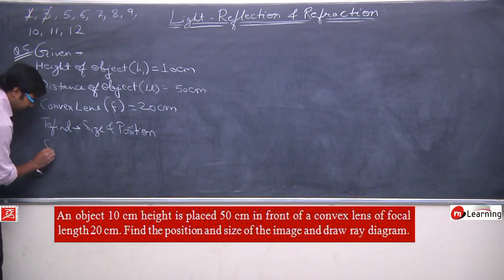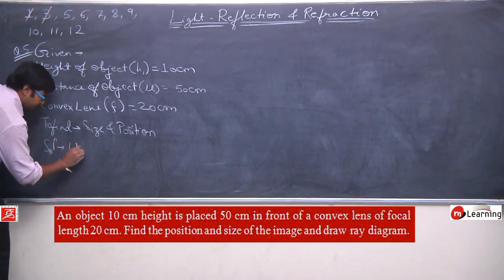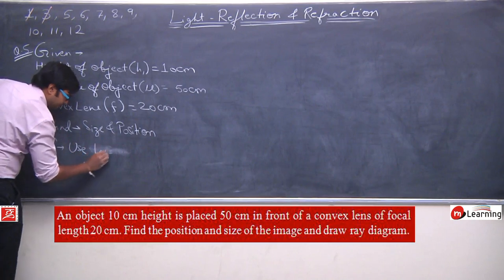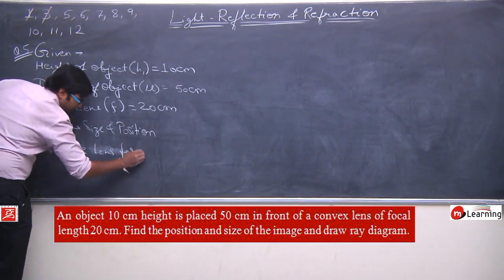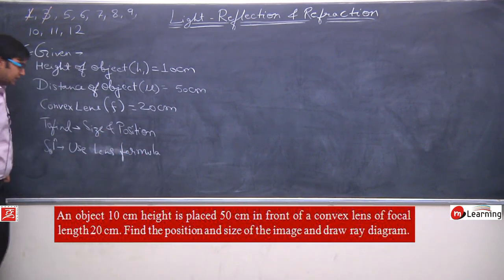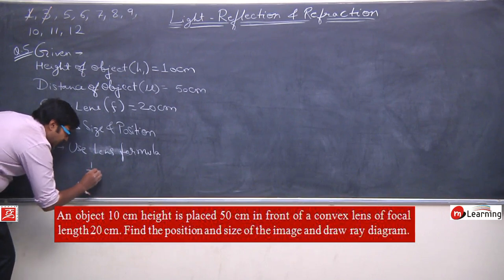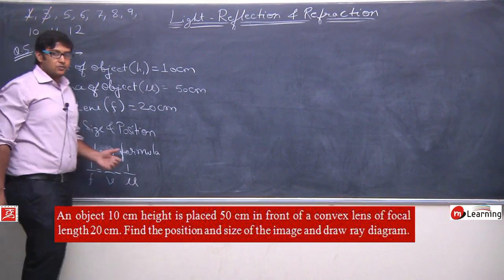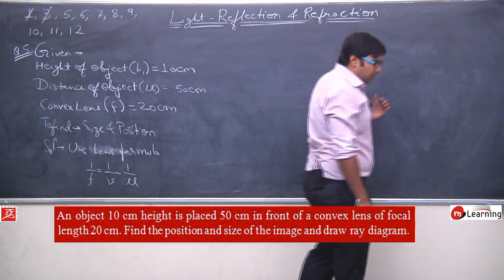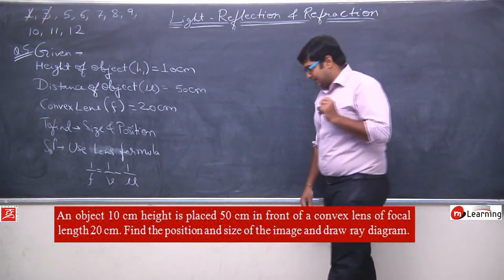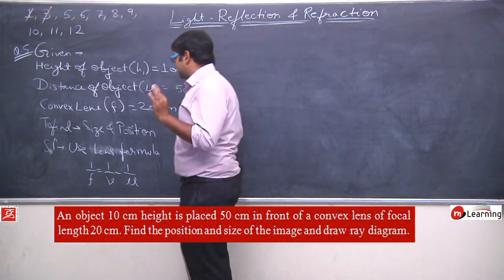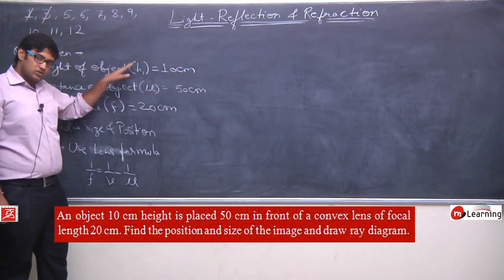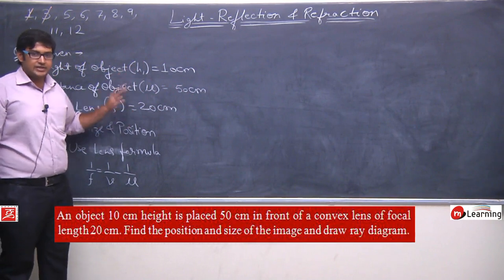We will use the lens formula: 1/f = 1/v − 1/u. But before using it directly, we must apply sign convention — sign convention is very important. Based on the given data, we need to assign correct signs to h1, u, and f.